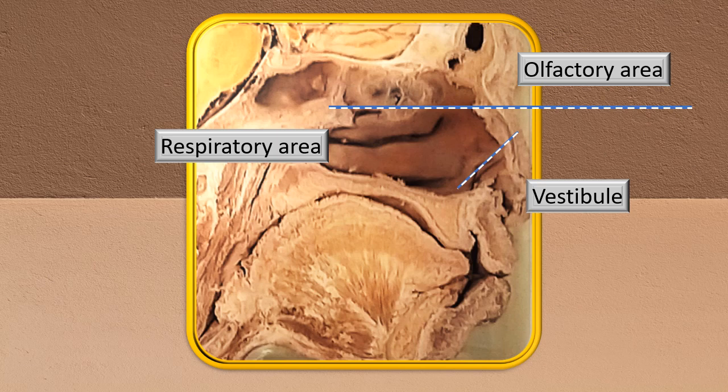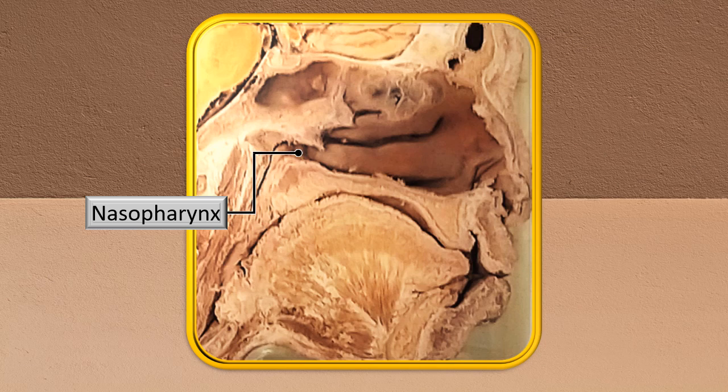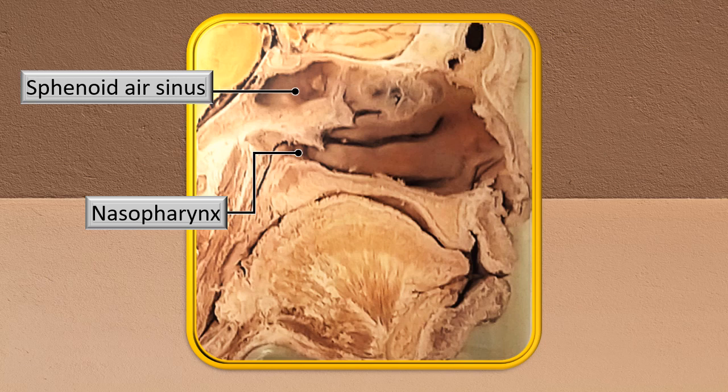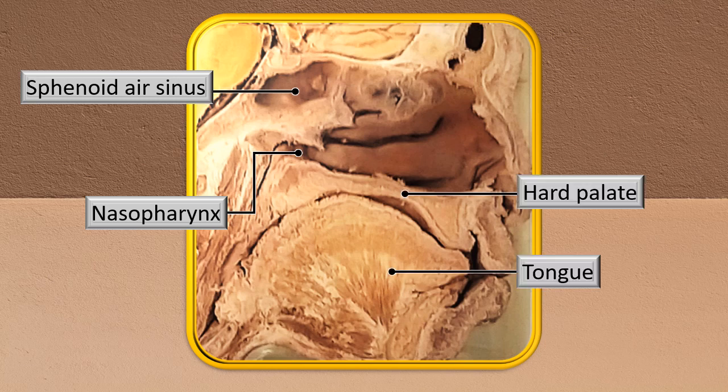The vestibule region is immediately above the anterior nares. There is another area closely related to the nose right behind the posterior choana — that is the nasopharynx, the cavity immediately behind the nasal cavity. In the same discussion context, we will also identify whatever is immediately visible in the near vicinity. For example, the sphenoid sinus can be seen immediately above and behind the nasal cavity. The hard palate and tongue below are also shown, as the hard palate separates the nasal cavity from the oral cavity.